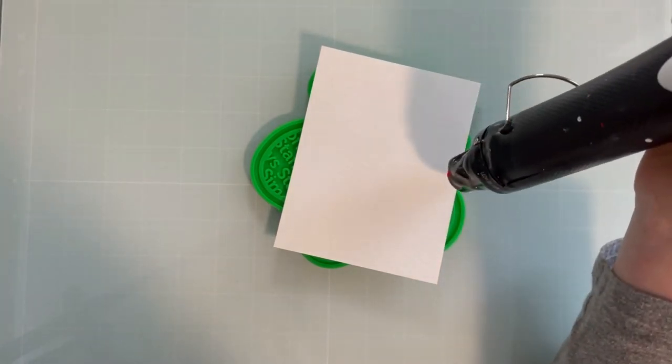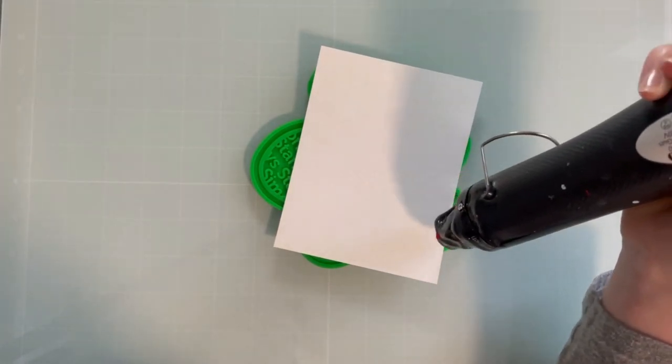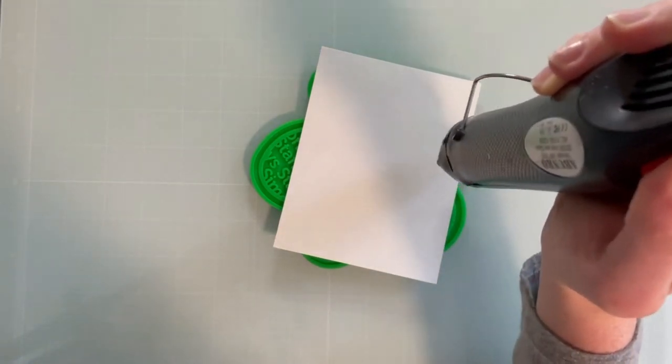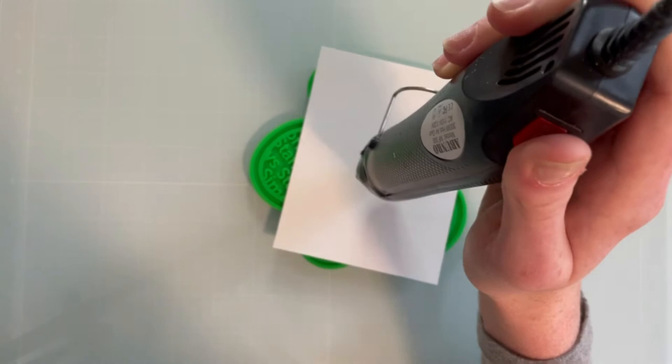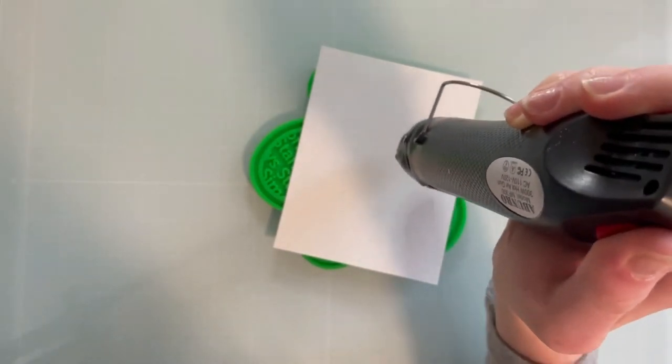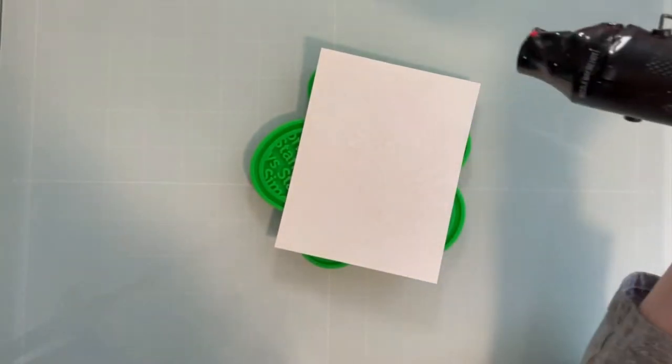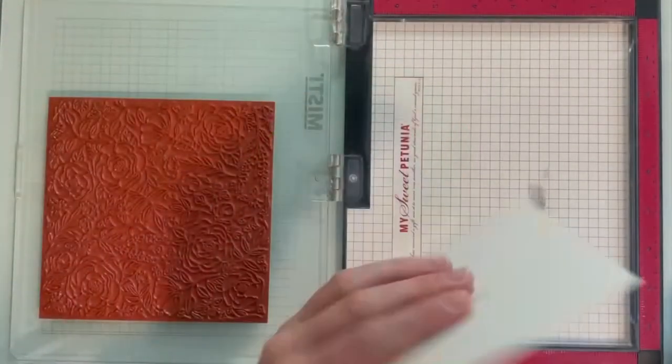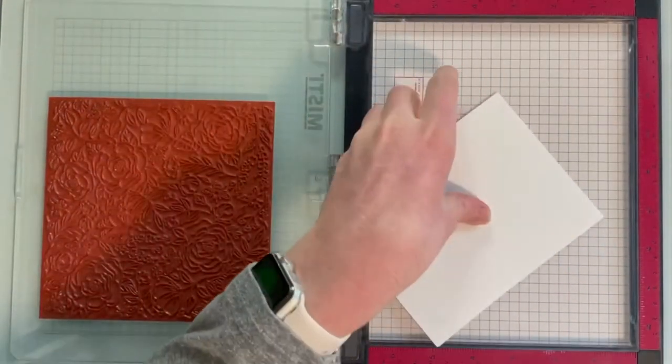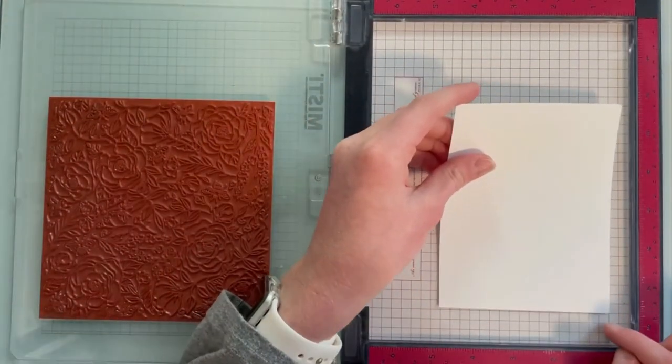I do like to put the paper on this Positively Everything tool when I'm heat setting a full panel, because it just helps keep my hands from smudging it or from getting heated. And it just helps keep it in place. It's also heat resistant or heat proof, I guess, so it's totally okay.